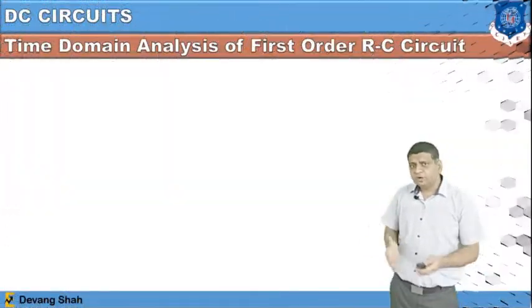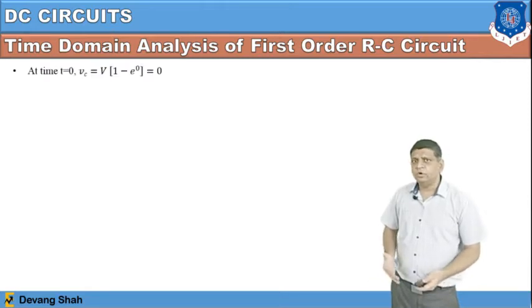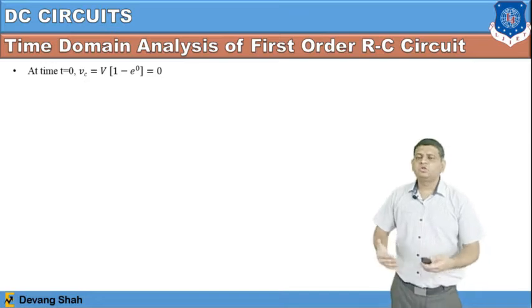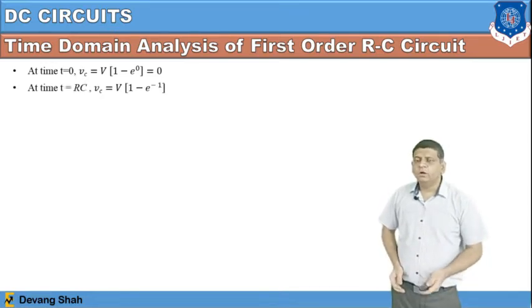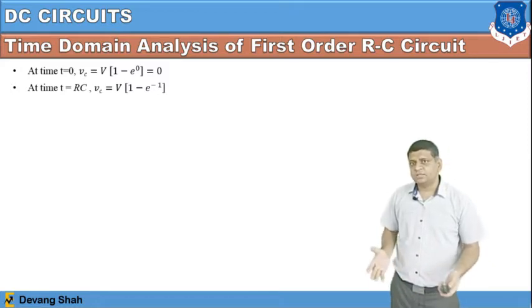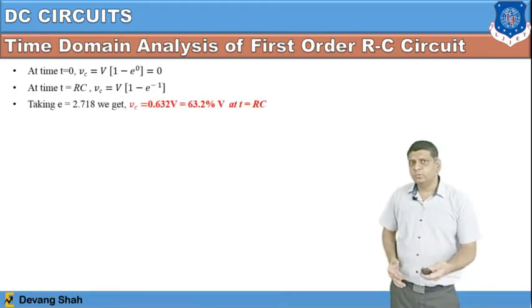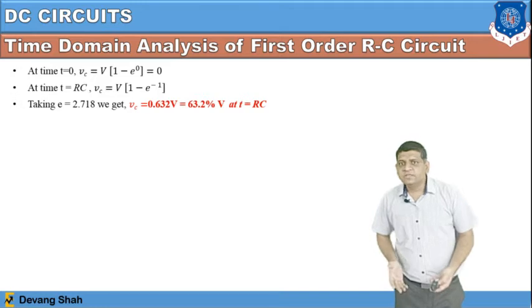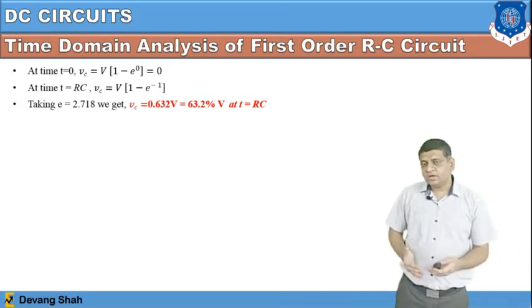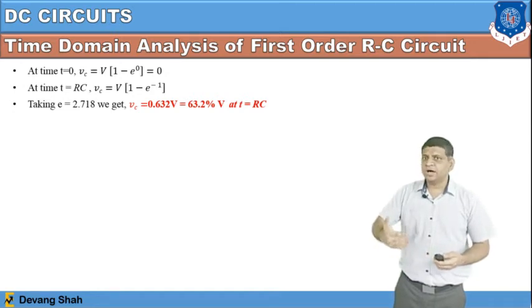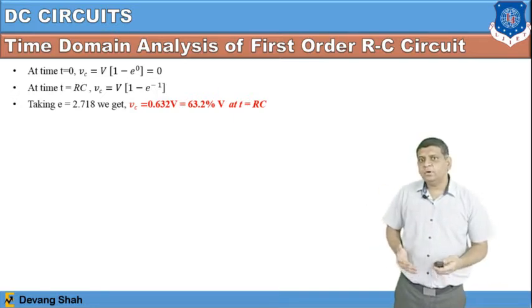Taking different values of time: when T equals zero, the voltage across the capacitor is zero. When T equals RC — the multiplication of the resistor and capacitor values — Vc equals V·(1 minus e^(minus 1)), which gives Vc equals 0.632·V. This means when time equals RC, the capacitor is charged to 63.2 percent of the total applied voltage. That is why RC is called the time constant.